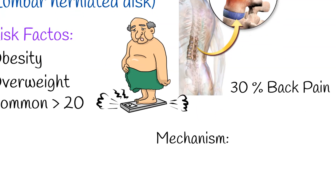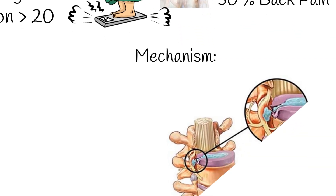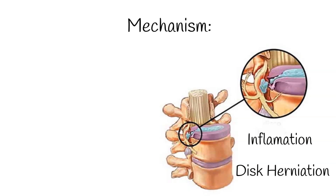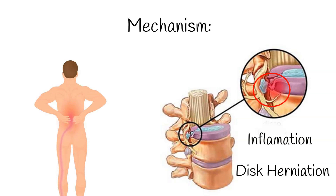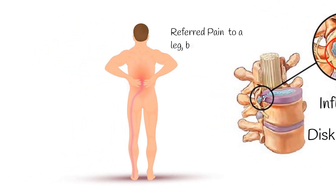The exact mechanism of why intervertebral disc injury causes back pain is not known, but it can be due to inflammatory processes. An unherniated disc can press on one of the lumbar or sacral nerve roots. The pain may be located in the low back or referred to a leg, buttock, or hip. When the pain goes down the leg from the lower back, it is called sciatica.